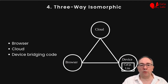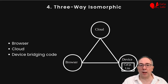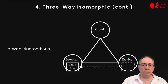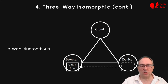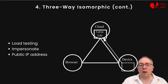4. Freeway isomorphic. To interact with arbitrary IoT devices, we need to write some bridging code. But we want the same code to run in a Raspberry Pi, in the browser, or in the cloud. Running bridging code in the browser means that an Android phone with Chrome is all you need to share local Bluetooth devices. And when it runs in the cloud, we can perform load testing at scale, impersonate offline devices, or interact with devices that have a public IP address.